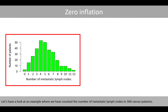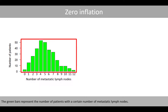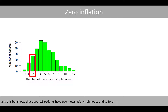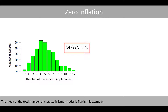Let's have a look at an example where we have counted the number of metastatic lymph nodes in 300 cancer patients. The green bars represent the number of patients with a certain number of metastatic lymph nodes. For example, one bar shows that about four patients have no metastatic lymph nodes, another shows about 15 patients have one metastatic lymph node, and another shows about 25 patients have two metastatic lymph nodes. The mean of the total number of metastatic lymph nodes is 5 in this example.